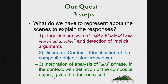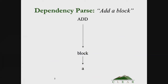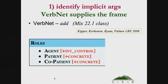It's important to have a definition of a composite object in order to do the integration appropriately. Looking at the linguistic analysis, here's a simple dependency parse of 'add a block': you have 'add' and the block as a dependent off of 'add.' Because we know it's an imperative sentence, we can immediately fill in an understood 'you' as the subject. And then we really want another dependent — 'add a block to what?' One place we could get that is VerbNet; you could also get it from PropBank or FrameNet — any resource that gives you sub-categorization frames for verbs. VerbNet tells you that you would expect an agent, a patient, and a co-patient in this kind of structure.